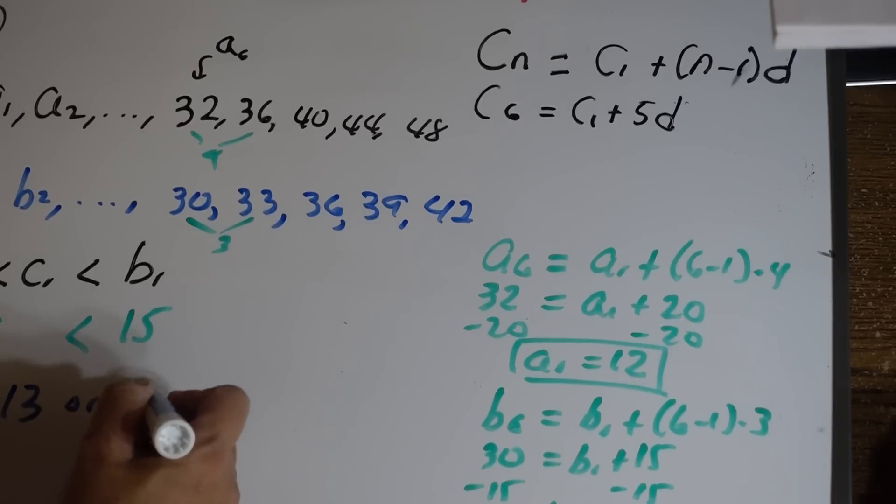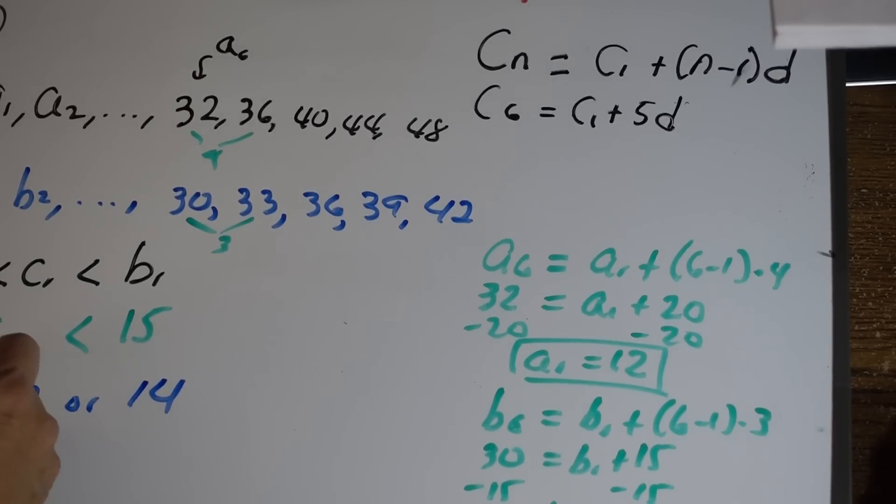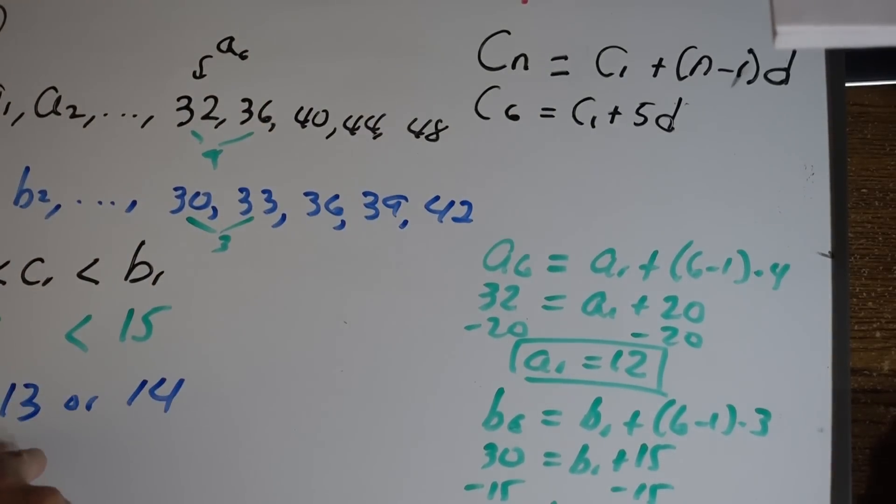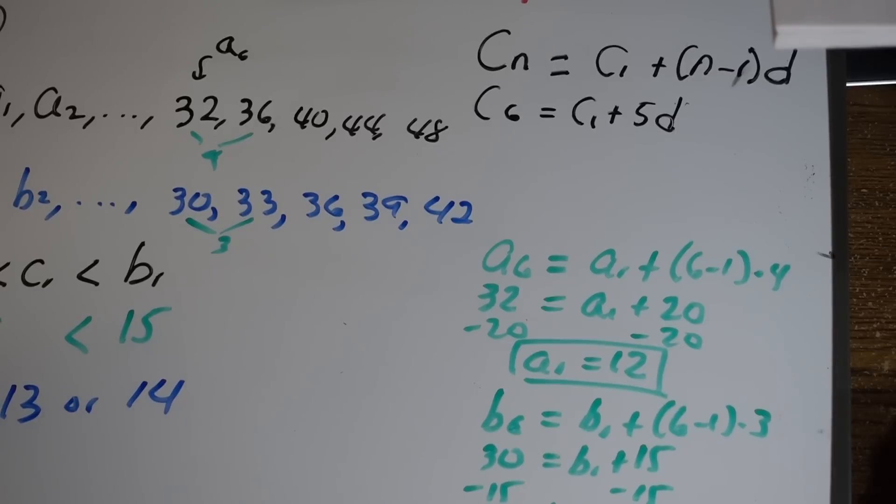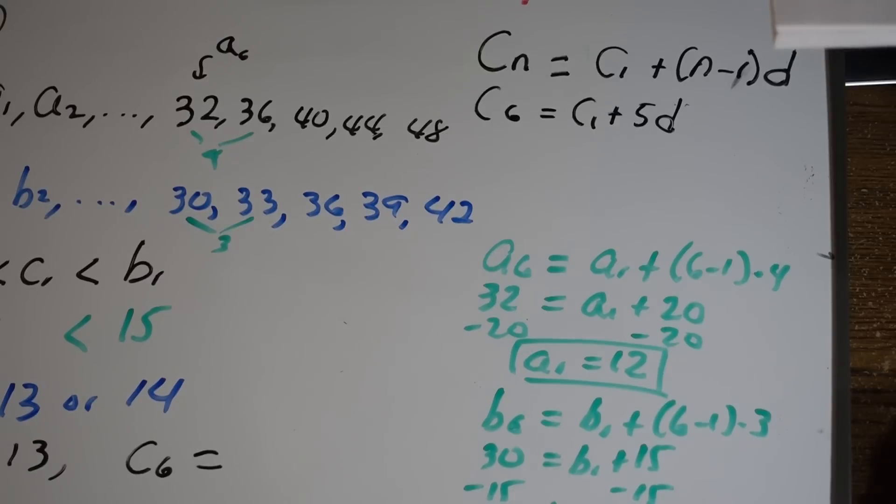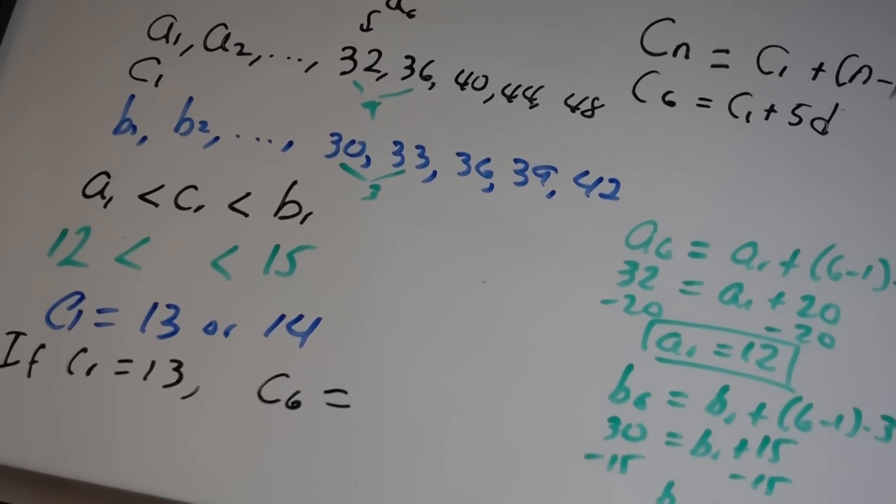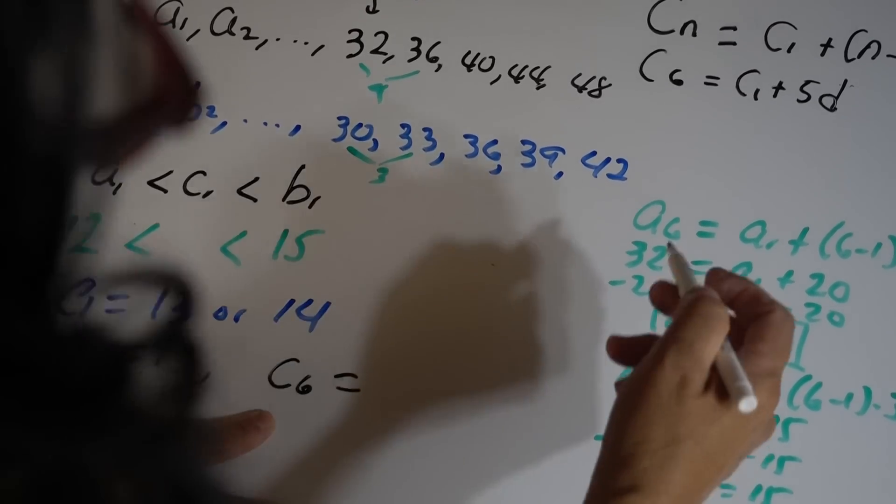Remember we're looking for c_6. In order to find c_6, remember we had this formula right here. So let's see. If c_1 is 13, because we have two different answers here, if c_1 is equal to 13, then c_6 is going to be what? c_6 will be c_1 plus 5 times the difference.